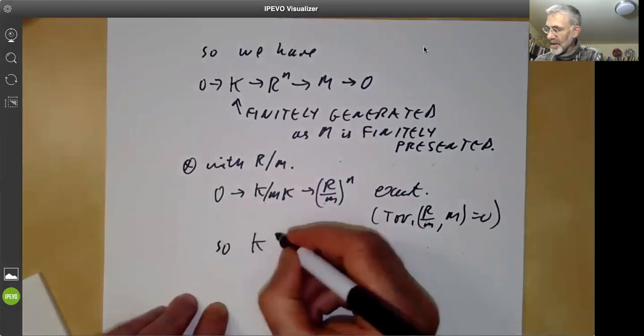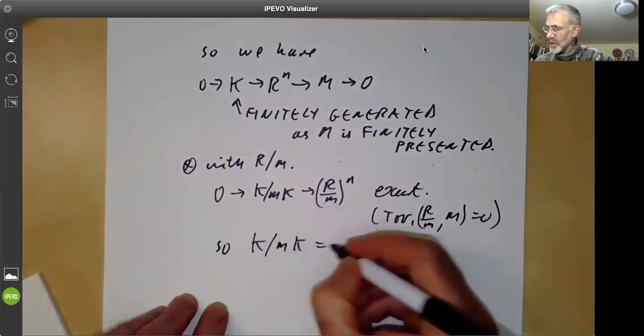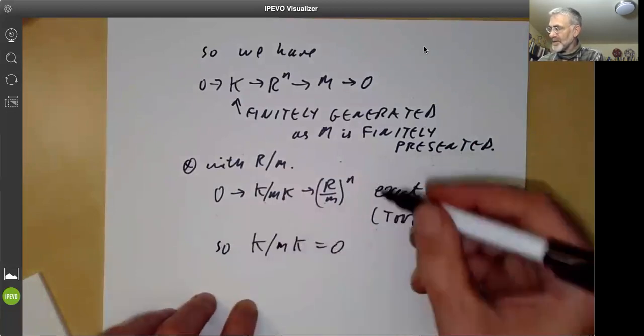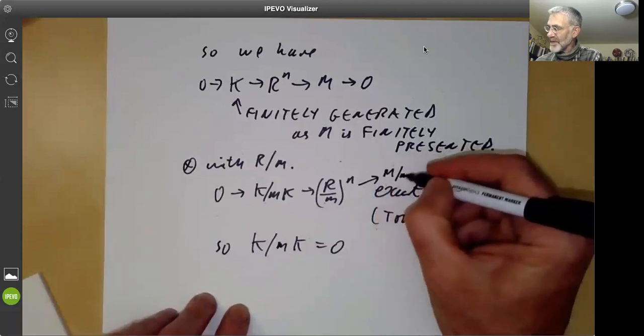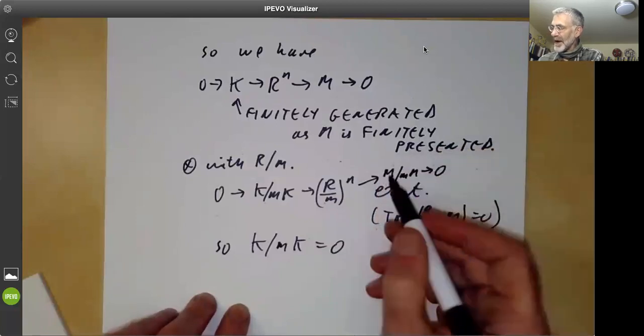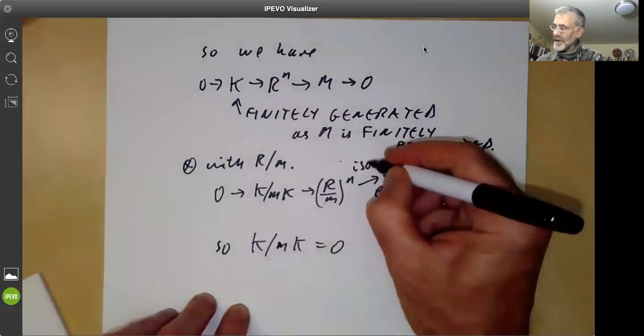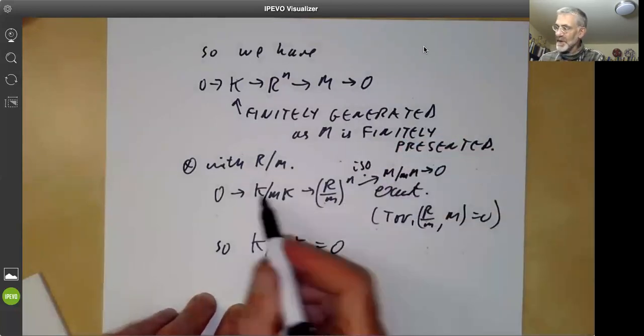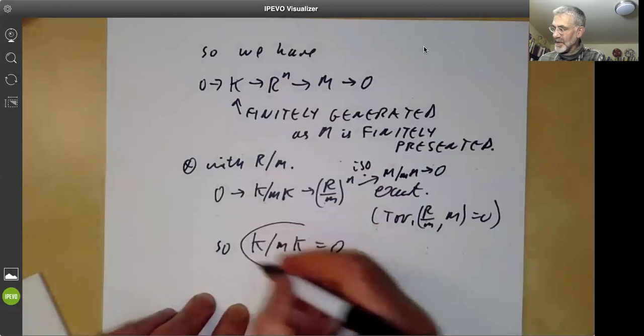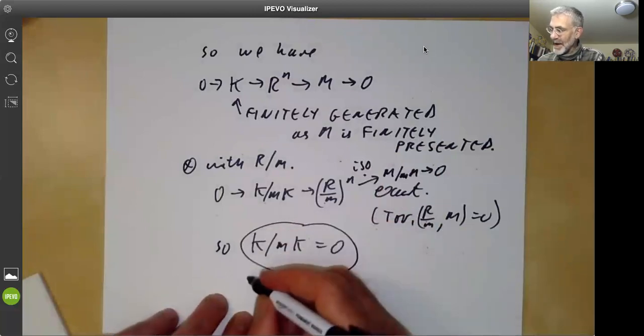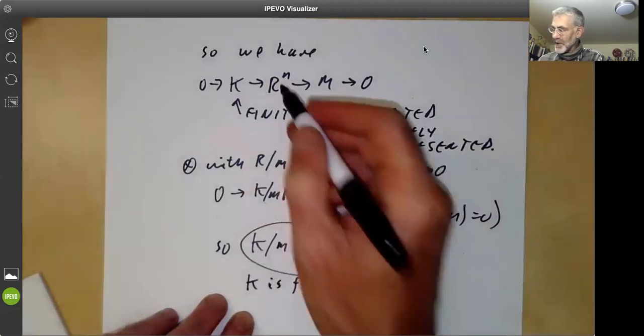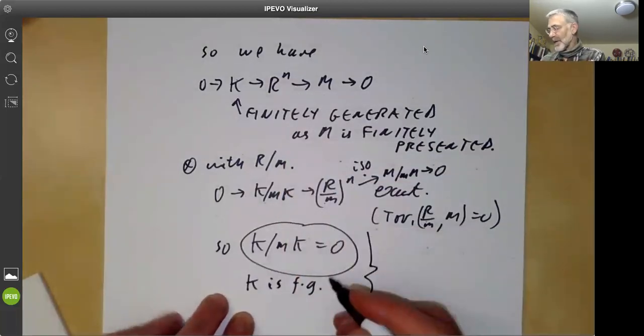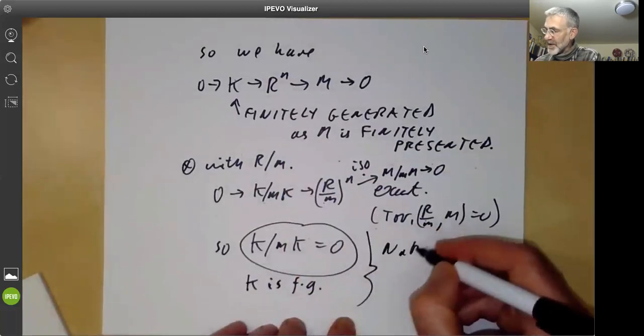So K over MK is actually equal to 0 because this maps to M over M times M goes to zero. And we know that this is an isomorphism. So if this is an isomorphism and this is exact, it means this is equal to zero. And we know K is finitely generated, as we said up there. So now we again notice that Nakayama's lemma applies.